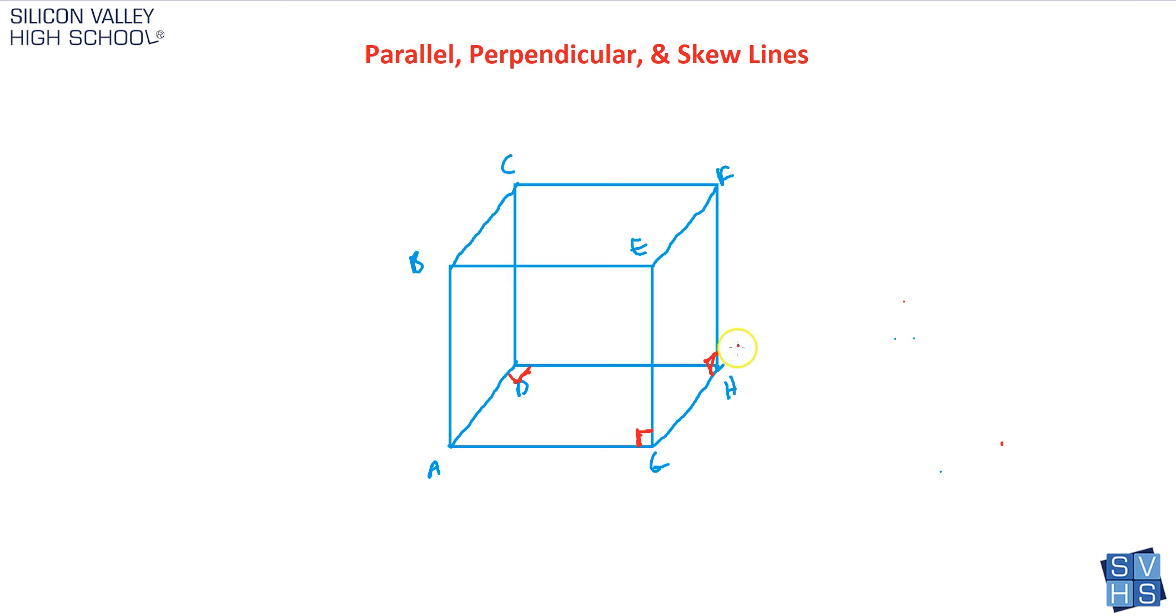And so what would be some skew lines? That's kind of tricky, because if you said AB and CB are skew, well, that's wrong, because actually, that left side of the box is its own plane. So these two lines would be on that plane. So this is harder than you think. So find me two lines that are just not even on the same plane, thus they're skew, and they'll never cross.